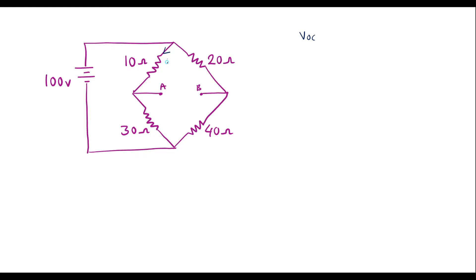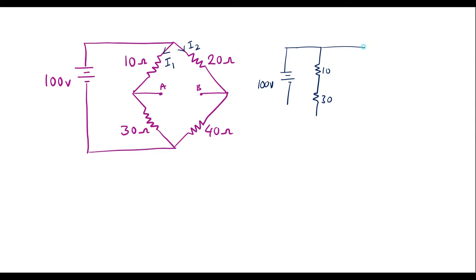Let me assume current through the first branch is I1 and current through the second branch is I2. The equivalent circuit is: 100 volts with 10 ohm and 30 ohm in series (current I1), and 100 volts with 20 ohm and 40 ohm in series (current I2). The voltage across each parallel combination is 100 volts.